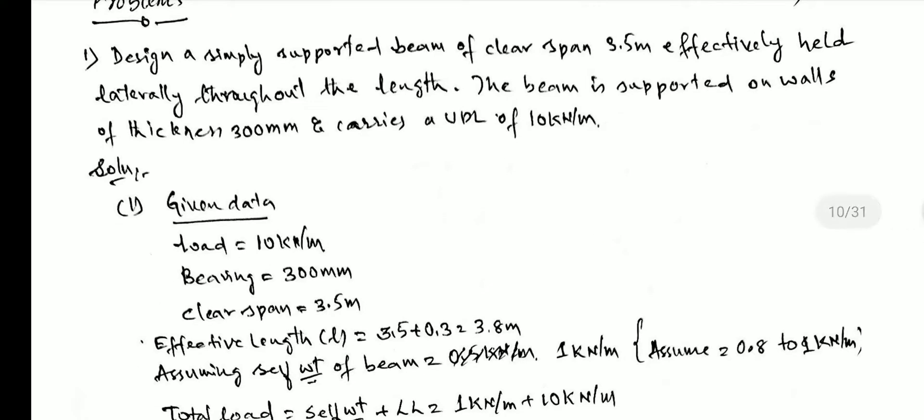From the problem data: the load is 10 kN/m, the wall thickness (bearing) is 300 mm, and the clear span is 3.5 m. We require the effective span, which is calculated by adding half the wall thickness from each side. So effective span = 3.5 m + wall thickness, giving us an effective span denoted by L_eff.